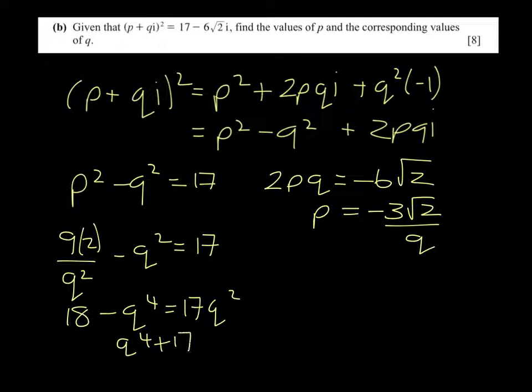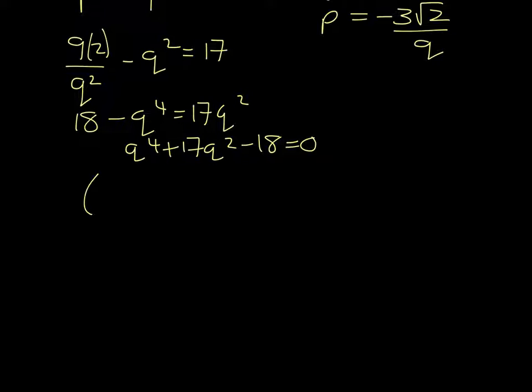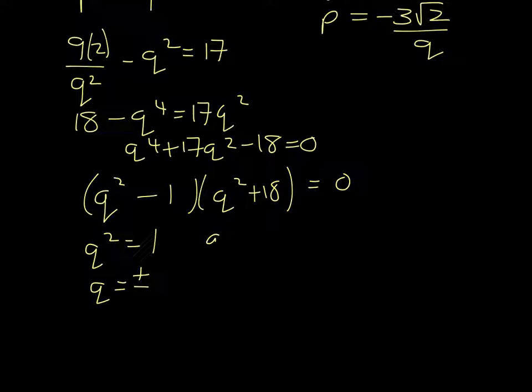q to the 4 plus 17 q squared minus 18 equals 0. And we notice that that factorizes q squared, and we want to have plus 18 minus 1. So q squared equals 1, which means that q equals plus or minus 1. q squared equals minus 18, which means that q equals root 18i, and the square root of 18 is 3 root 2.